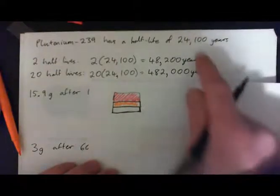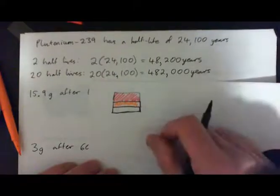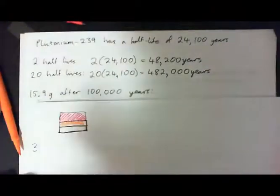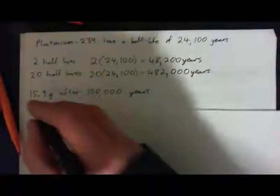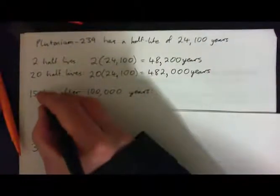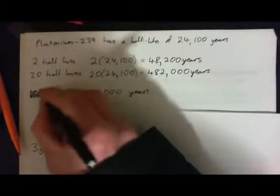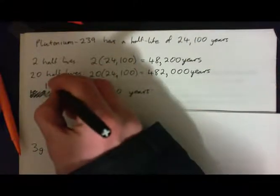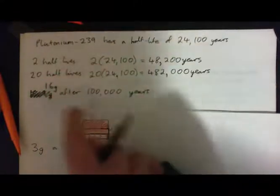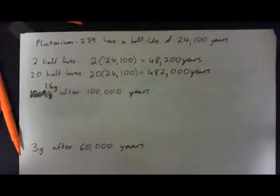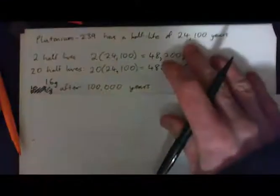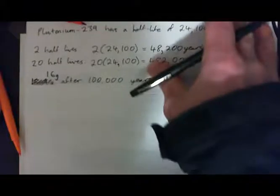If you want to get three half-lives, you just multiply by three. Okay, so on to the next part. We're going to take 16 grams and figure out how much is remaining after 100,000 years. I'd like to do a little table here.